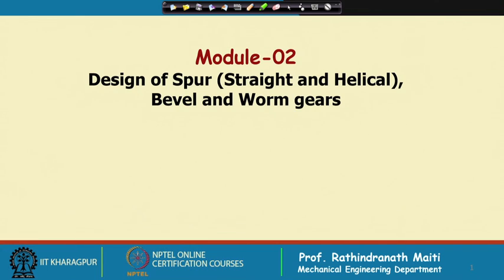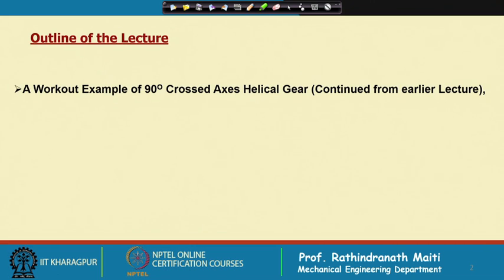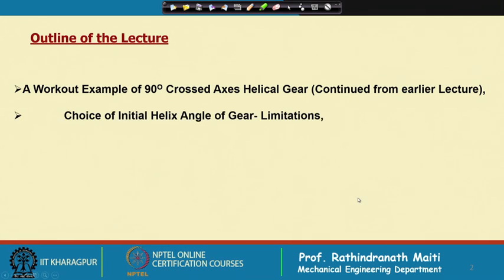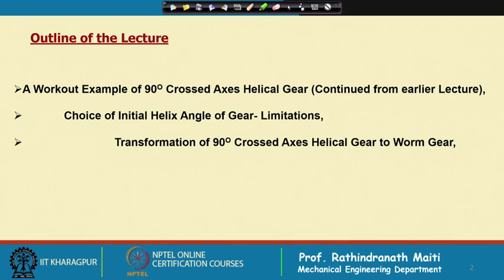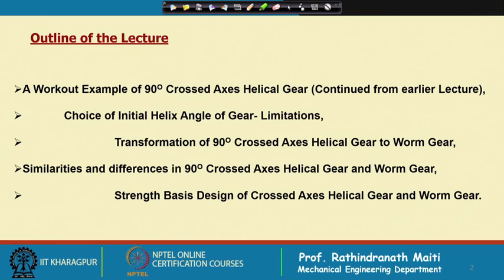We are continuing with Module 2: design of spur, straight and helical bevel, and worm gears. Today is the last lecture of this week — Lecture 10. This is a continuation of crossed helical gear, Part 2. In this lecture, I shall cover a worked example of 90-degree crossed axis helical gear, choice of initial helix angle and their limitations, transformation to worm gear, similarities and differences between 90-degree crossed helical and worm gear, and strength-based design of both.